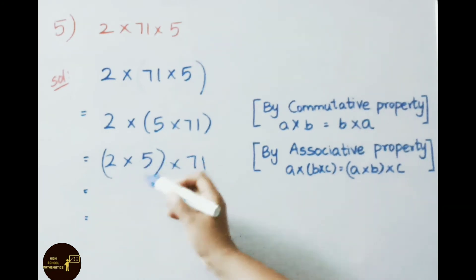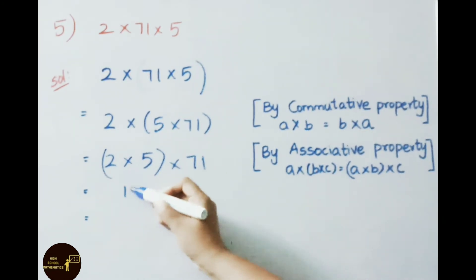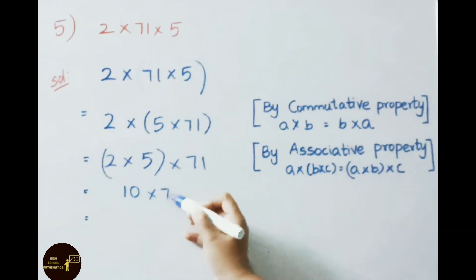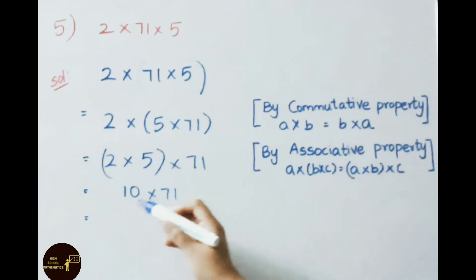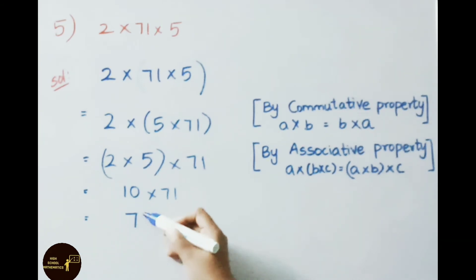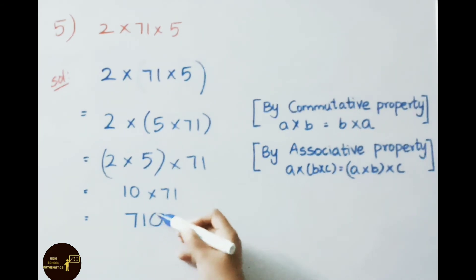That is (2 into 5) into 71. 2 into 5 is 10, into 71. 10 into 71 equals 710.